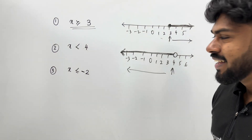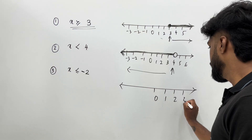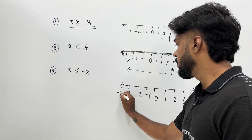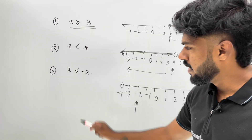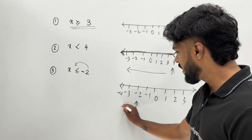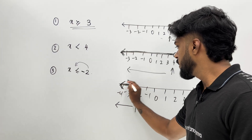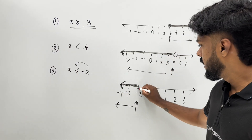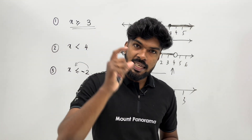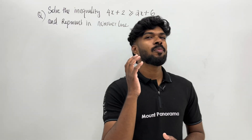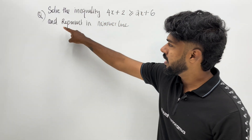X is less than or equal to minus 2. Let's write: 0, 1, 2, 3, minus 1, minus 2, minus 3. We will write minus 2. X is less than or equal to minus 2 — that is the same. We will write that. Solve the inequality: 4x plus 2 greater than or equal to 2x plus 6, and represent on the number line.